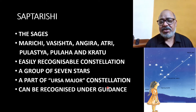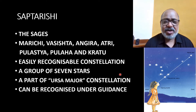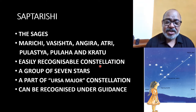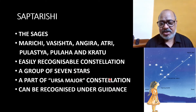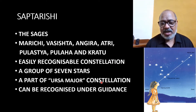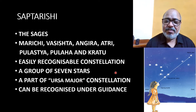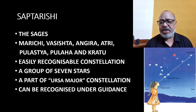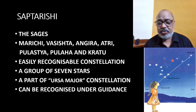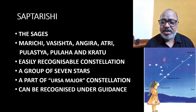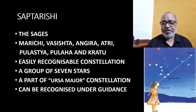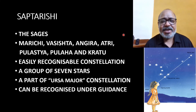A constellation is a group of millions of stars. There are many constellations in the sky. Ursa Major is also a constellation, and Saptarishi is part of the Ursa Major constellation. Like Ursa Major, there are many constellations in the sky. To understand these better, you should observe the clear night sky with a senior person in your family who can help you find the location of the seven sages.